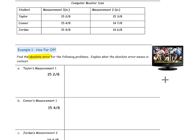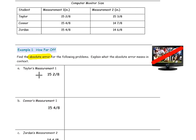Notice the TV on the right side of the screen. TVs are measured on the diagonal, and this is a 15-inch TV. Taylor, Connor, and Jordan have each measured this TV two times. Taylor's first measurement was 15 and 2-eighths inches, and his second was 15 and 3-eighths inches. In Example 1, we are going to find how far off their measurements are by finding the absolute error for each problem and explaining what the absolute error means in context.